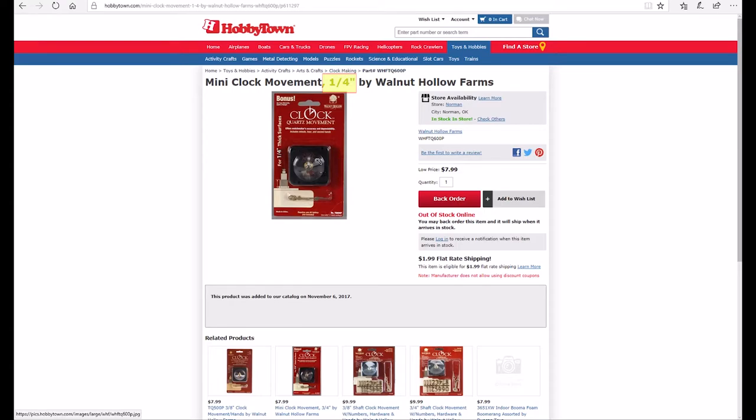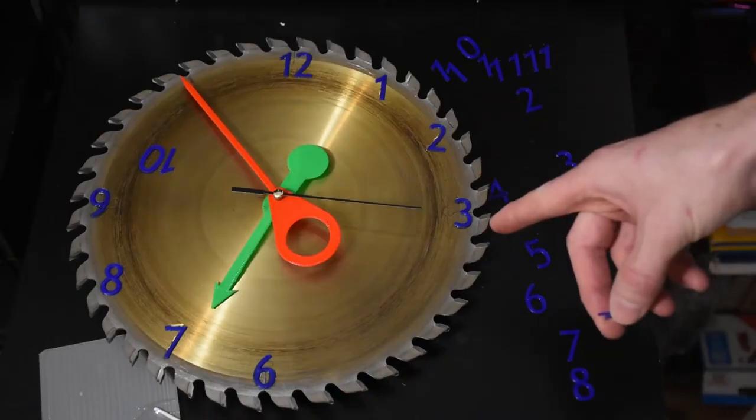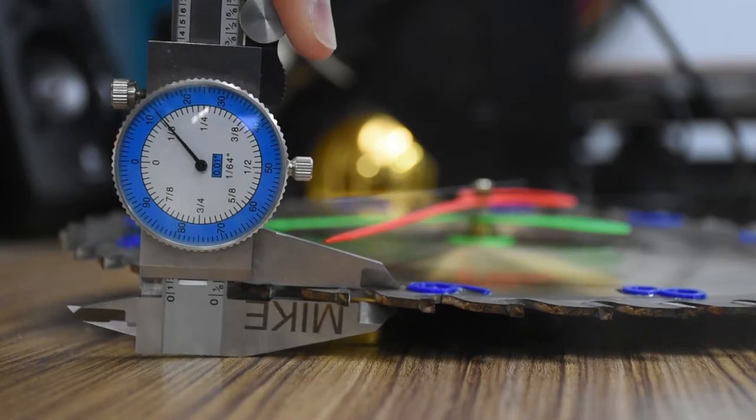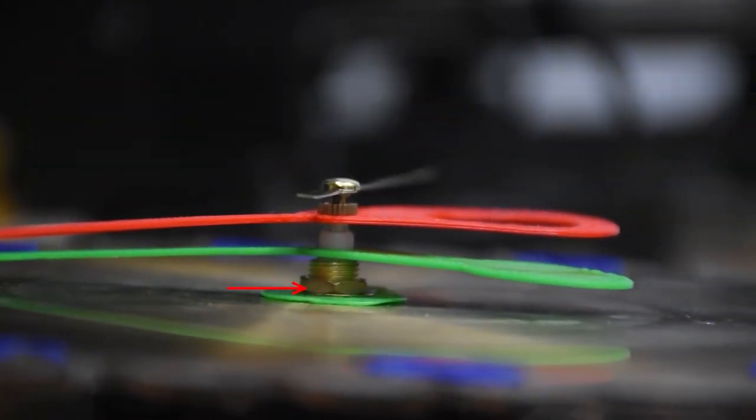They're made for a particular face thickness. The face of the clock is where the numbers go, and this saw blade is an eighth inch thick, so that's the face thickness. Make sure your movement has a long enough shaft to mount properly.